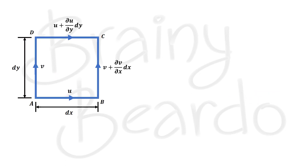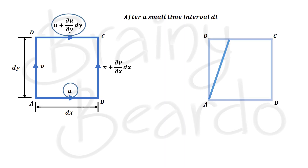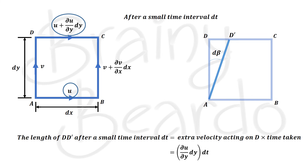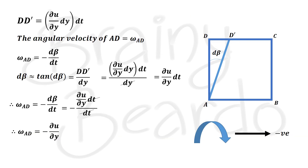Similarly, at the same interval dt, because of the difference between the two velocities, side AD rotates by a small angle dβ in the clockwise direction, and D moves to a new point D′. The length DD′ is (∂u/∂y)·dy·dt. Repeating the same steps as for side AB, but noting the angular velocity is negative because of the clockwise direction, we get ω_AD = −∂u/∂y.